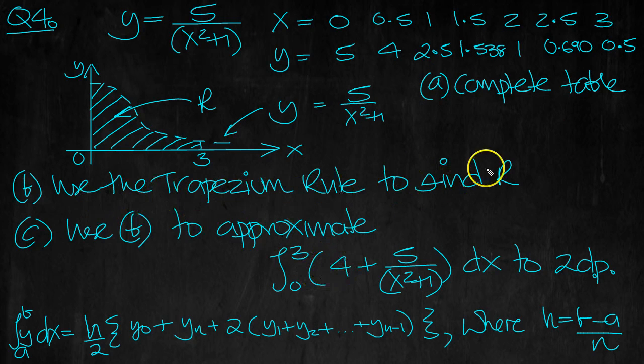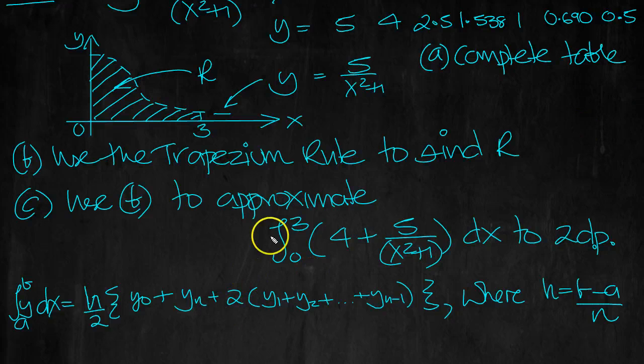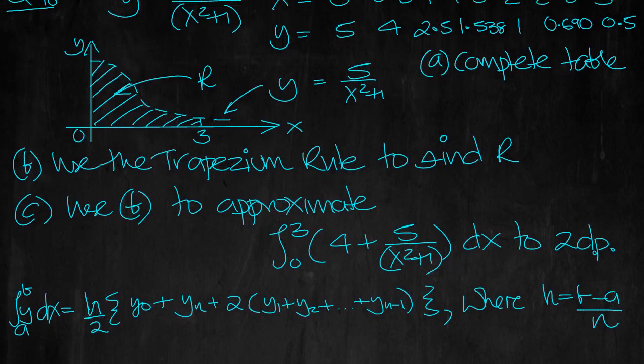Now let's do part B. Use the trapezium rule to find R. So we've got our values then. Here's our Y values. Y0, Y1, Y2, Y3, Y4, Y5, and Y6. So 7 Y ordinates in total. So N is the number of intervals, so that would be 6. Let's put that in.